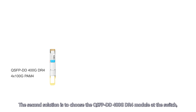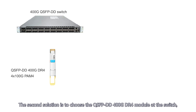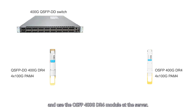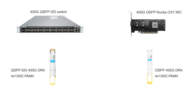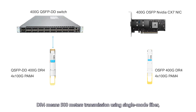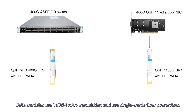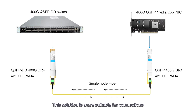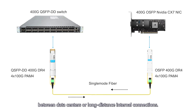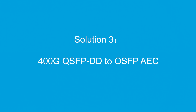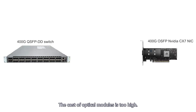The second solution is to choose the QSFPDD 400G DR4 module at the switch and use the OSFP 400G DR4 module at the server. DR4 means 500-meter transmission using single-mode fiber, where '4' refers to four optical channels. Both modules use 100G PAM4 modulation and single-mode fiber connectors. This solution is more suitable for connections between data centers or long-distance internal connections, though the cost of optical modules is higher.